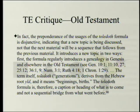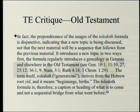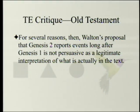The Toledoth formula regularly introduces a genealogy and derives from the Hebrew yalad, meaning 'beginnings, births.' It is a caption or heading for what is to come, not a sequential bridge from what went before — sometimes totally unrelated chronologically, as in 'these are the generations of Edom.' For several reasons, Walton's proposal that Genesis 2 reports events long after Genesis 1 is not persuasive as a legitimate interpretation of what is actually in the text.